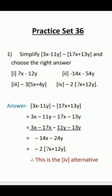Let's solve practice set 36. The first sum: simplify 3x minus 11y minus 17x plus 13y and choose the right answer. The four alternatives given are: 7x minus 12y; minus 14x minus 54y; minus 35x plus 4y; and minus 27x plus 12y.